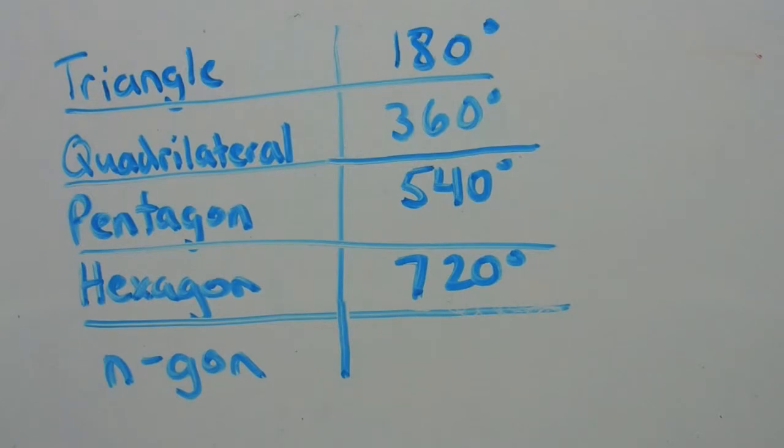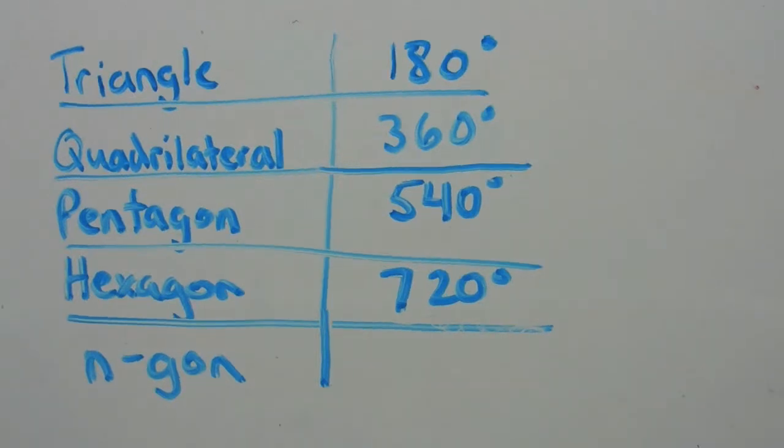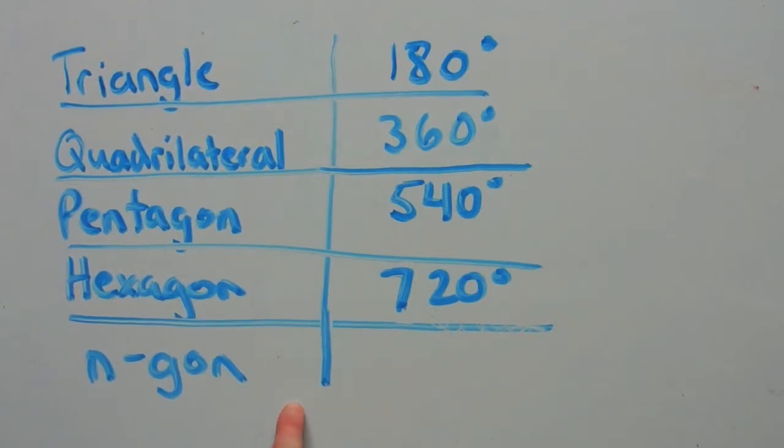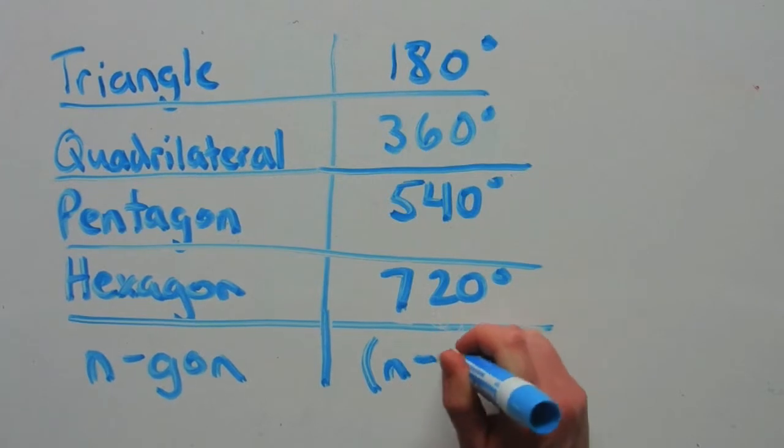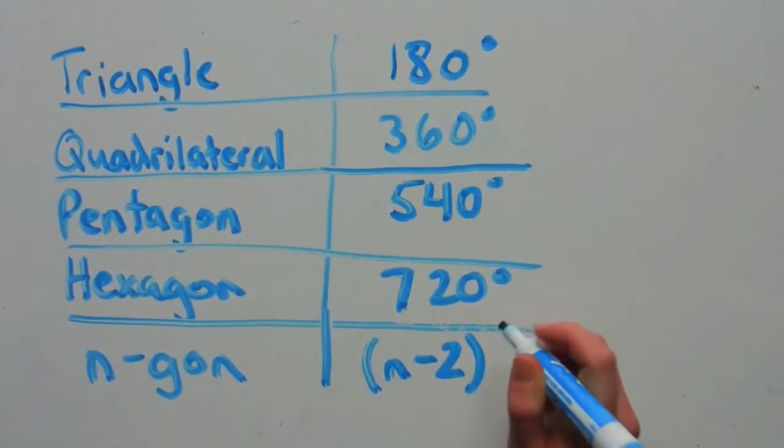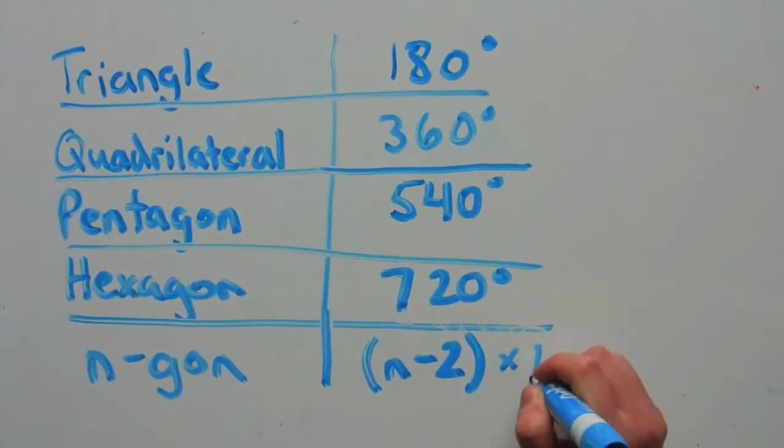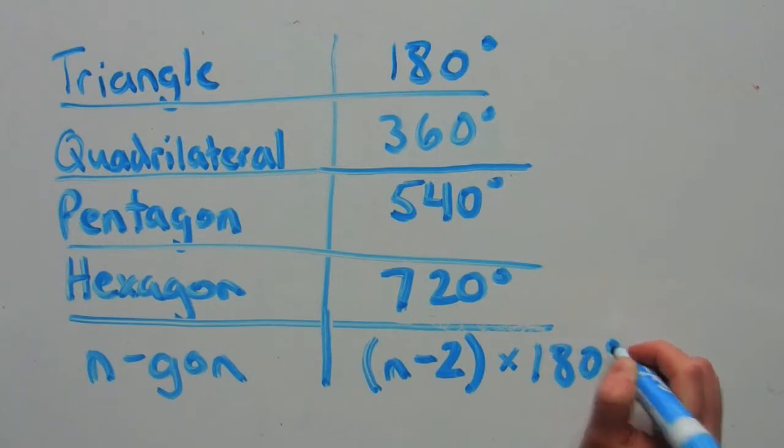The interior angles of a hexagon would add up to be 720 degrees, and so on, all the way up to n-gon. There is a specific formula for figuring out what the interior angles should sum up to be using the number of sides in the formula. We know that an n-gon has n sides. So we just take the number of sides, subtract two, and then multiply by 180 degrees.